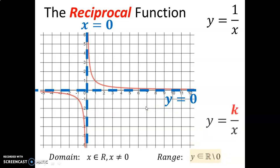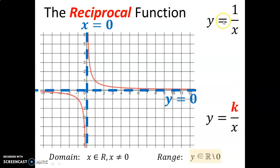Rational or reciprocal functions can take on different forms — the basic form has a 1 in the numerator, but that number can be any value. We call that value k; it can be 1, 2, 3, or any value. As that number grows, the curves move away from the origin.